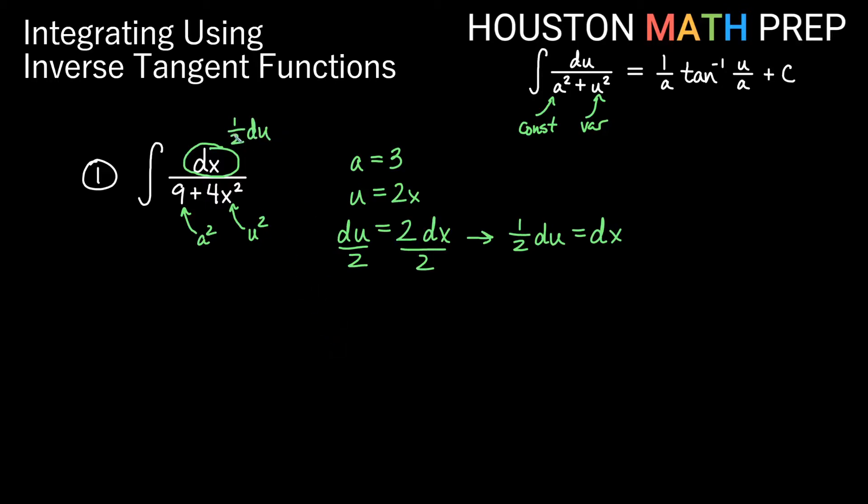Now this 1 half is just a constant multiple. I can go ahead and move that out front when I set up my integral. Let's do that. So we'll go ahead and say 1 half integral of du over a squared plus u squared. Okay, so we've set up exactly the formula that we have. We just have a multiple of 1 half in the front. That's no problem. So keep your 1 half. And now what does the formula say? It says we should get 1 over a inverse tangent of u over a plus our constant.